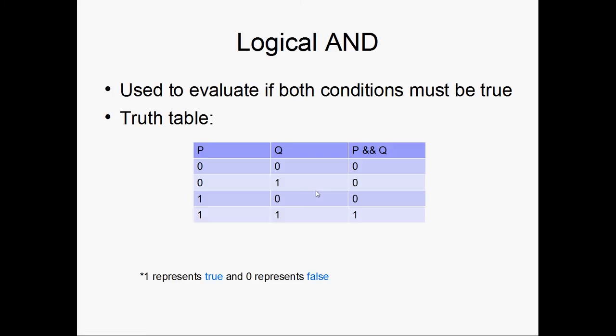First I'm going to talk about the logical AND. It's used to evaluate if both conditions are true. So we have two variables, P and Q. And then in this third column here I have P && Q evaluated out. So notice that P && Q is true only when P is true and Q is true. And I represent 1 with true and 0 with false.